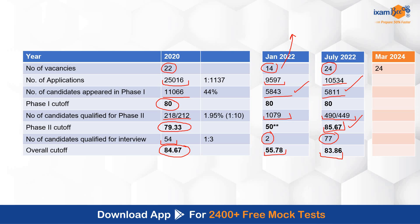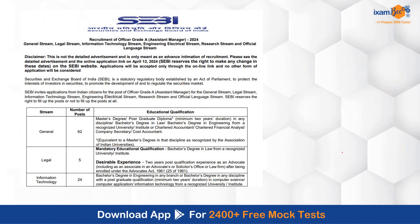And now in March 2024, there are 24 vacancies. Coming to the eligibility criteria — the detailed advertisement is not yet out; this is just an advanced intimation of recruitment. As per this, the detailed advertisement and online application form will be available from 13th April. For information technology, the eligibility qualification is a bachelor's degree in engineering in any branch, or a bachelor's degree in any discipline with a post-graduate qualification in computer science, computer applications, or IT from a recognized university.